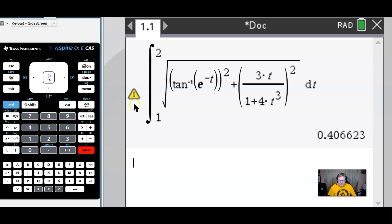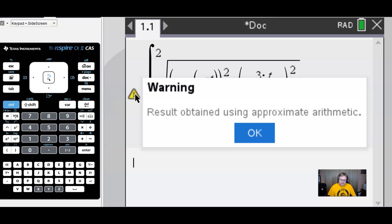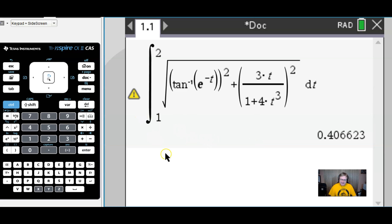All should go well when I hit enter and I get this decimal answer. Again, don't worry so much about little warnings that you might get. Result obtained using approximate arithmetic. That's the only way the inspire knows how to do such a complicated integration problem like this. There could be a variety of things happening in the background. Riemann sums and so what. So we are good to say that our answer is rounded to three digits as 0.406 or 0.407. Let's take that back to our document.